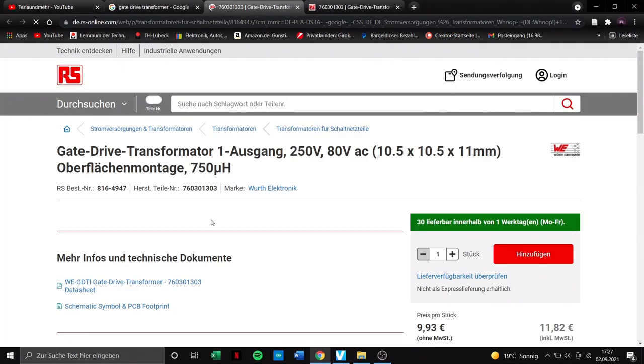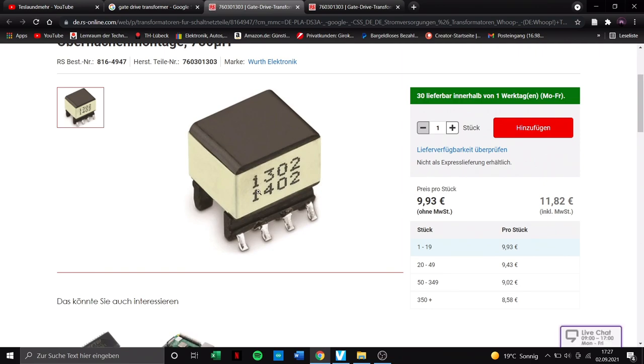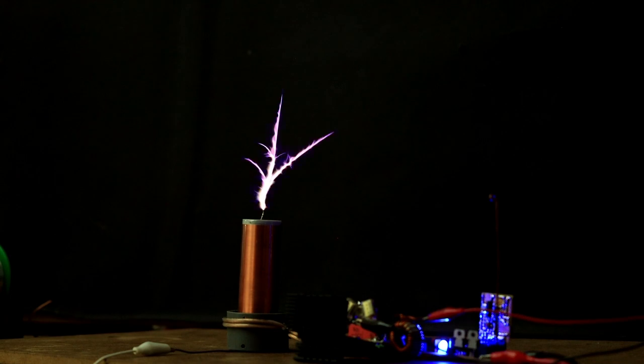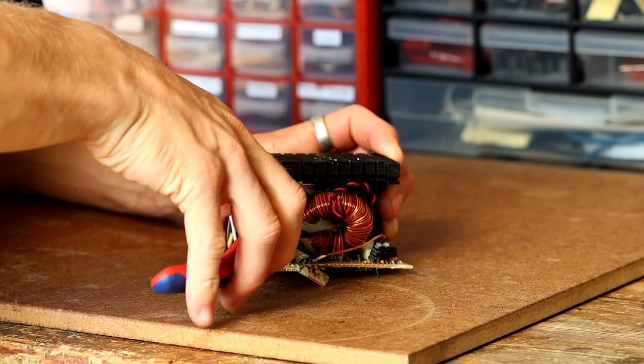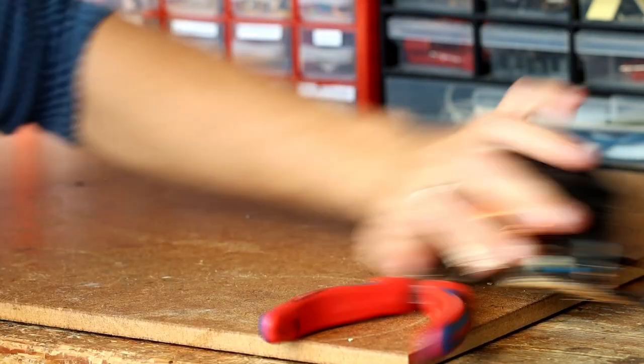Gate drive transformers can be bought, but in my opinion it's much better to make them yourself because you can still adjust it if there are any problems. If you build a solid state Tesla coil for the first time, many people use any ferrite core they have lying around. But this is a big mistake.